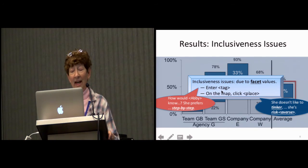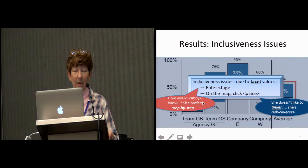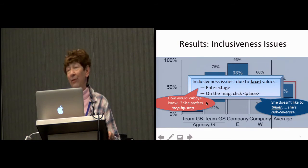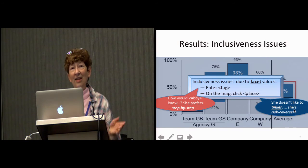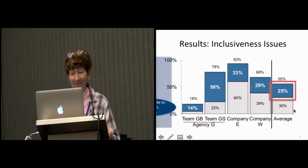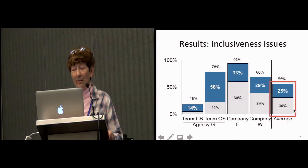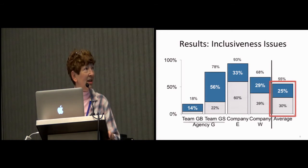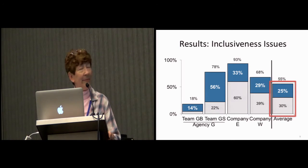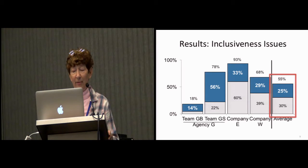Here's one example: Abby was supposed to enter a tag. They decided she wouldn't do it. One participant said, 'How would Abby know? She prefers step-by-step.' Another said, 'She doesn't like to tinker. She's risk-averse. She's not going to do that.' So 25% gender inclusiveness issues. They also used the method to find another 30% on average of just generic usability issues — like the font's too small and that sort of thing. In total, 55% of the features they evaluated had something found.